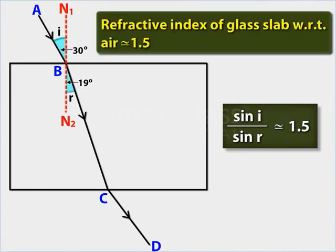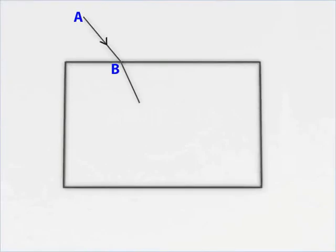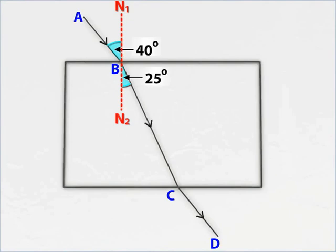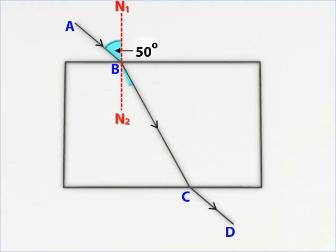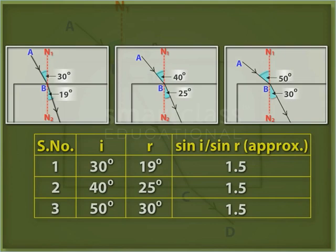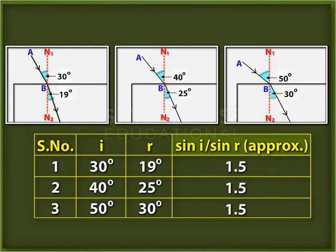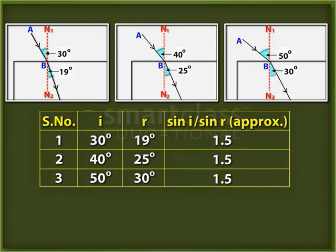The ratio comes out to be nearly 1.5 — that is, the refractive index of the glass slab with respect to air. Repeat the experiment for different values of angles of incidence. What do you infer from the activity? For every pair of media, the ratio of the sine of the angle of incidence and the sine of its corresponding angle of refraction is always constant. This verifies Snell's Law.